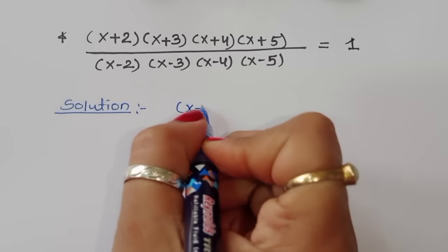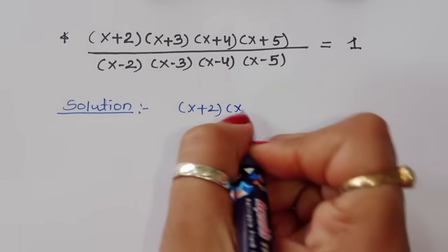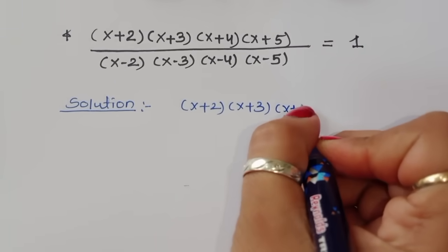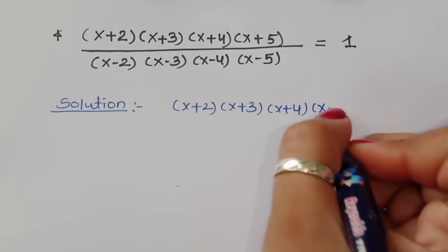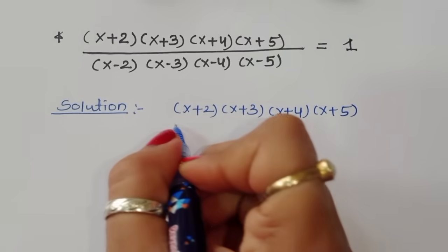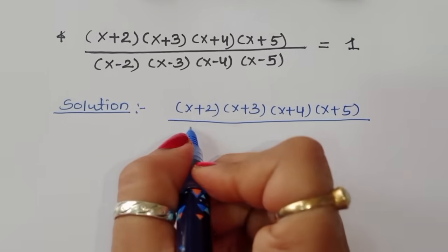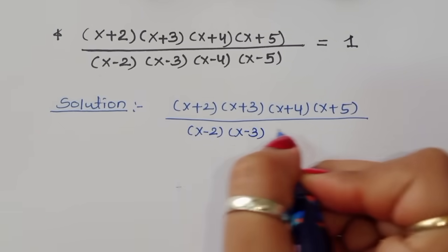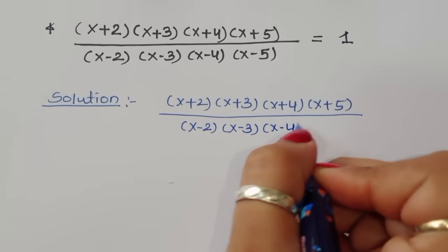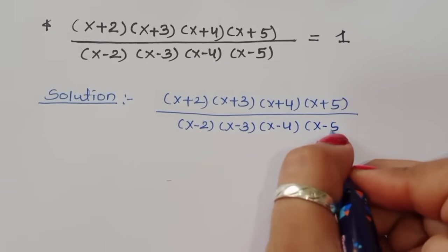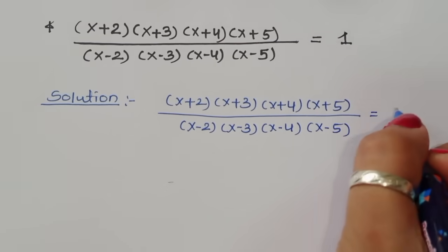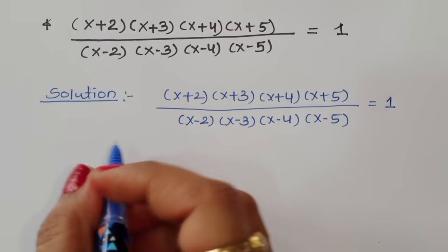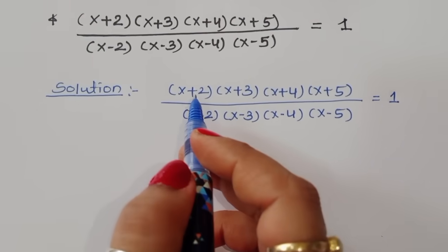So we have the given question: (x+2)(x+3)(x+4)(x+5) divided by (x-2)(x-3)(x-4)(x-5) is equal to 1. We can do one thing here — we can do some rearrangement.